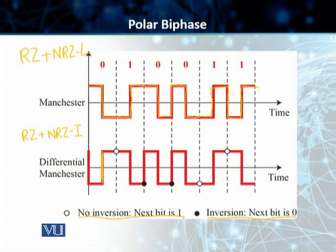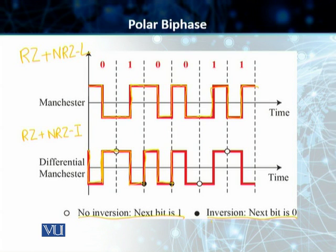In the case of zero, we start from a negative voltage level, make a transition in the middle and finish. The next bit is one, so there will be no change at the boundary — we make a transition in the middle and finish. The next bit is zero, so we go up, start from the positive level, make a transition and finish. The next bit is zero again, so we invert, go up, make a transition, and come down. The next bit is one, so no inversion — straight away make a transition and finish. The next bit is one again, so no inversion, we go straight and finish.